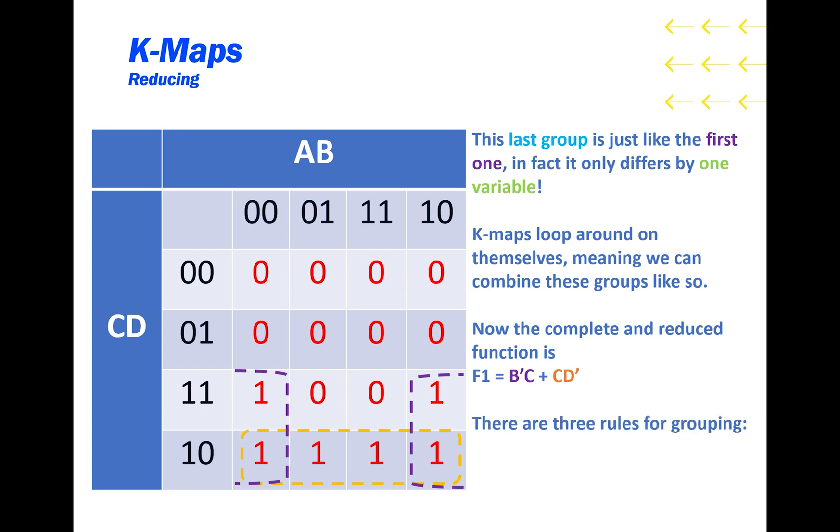When grouping on a K-map, you need to remember these three rules. The group must be rectangular, the group must contain the same output, and the group must contain an area equal to a power of 2.